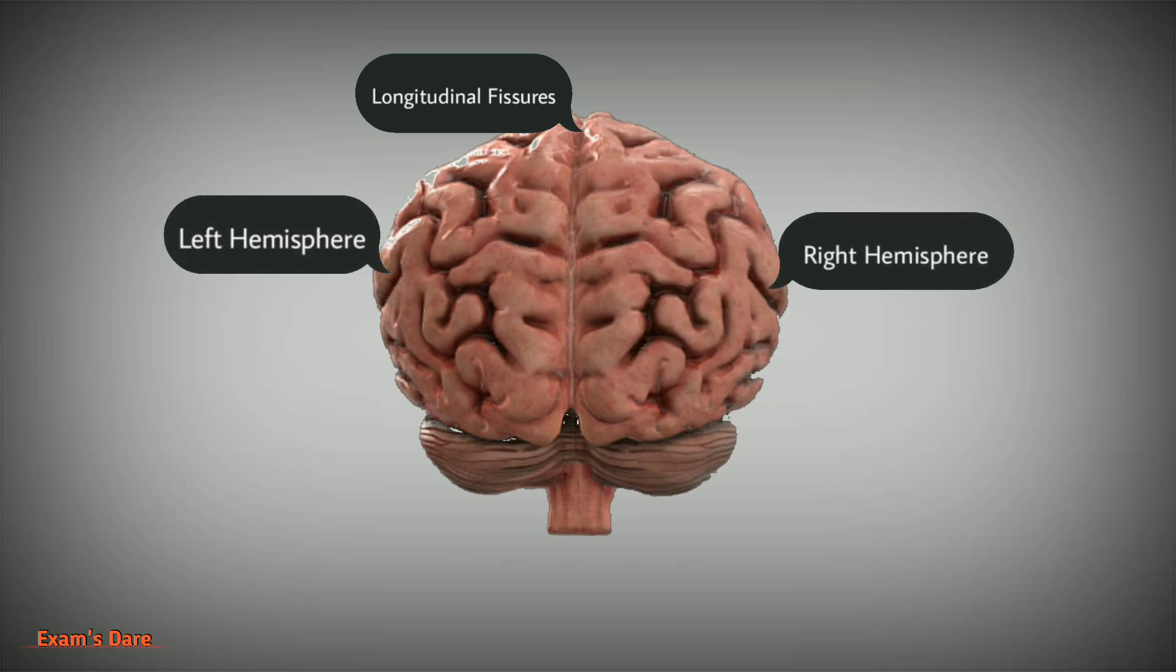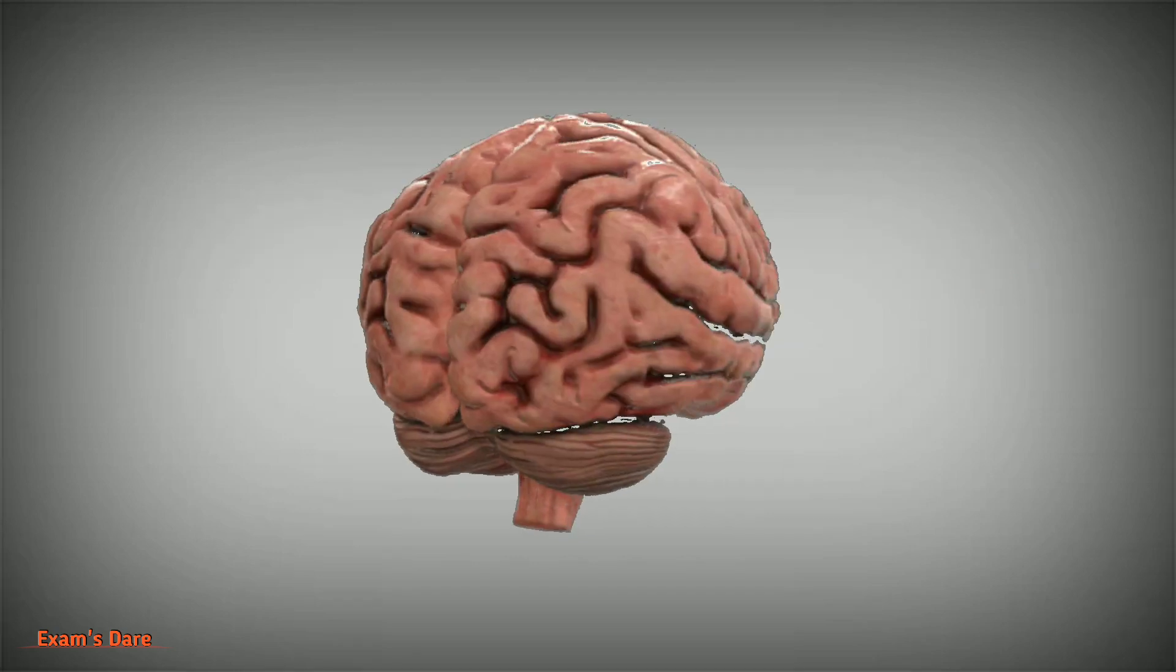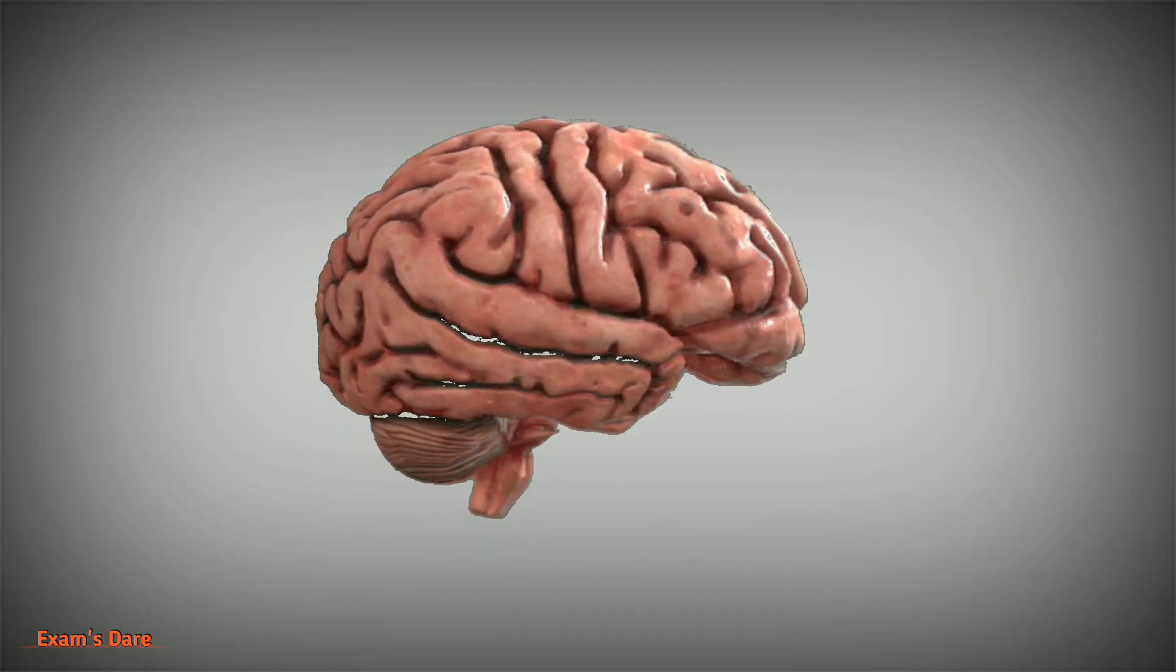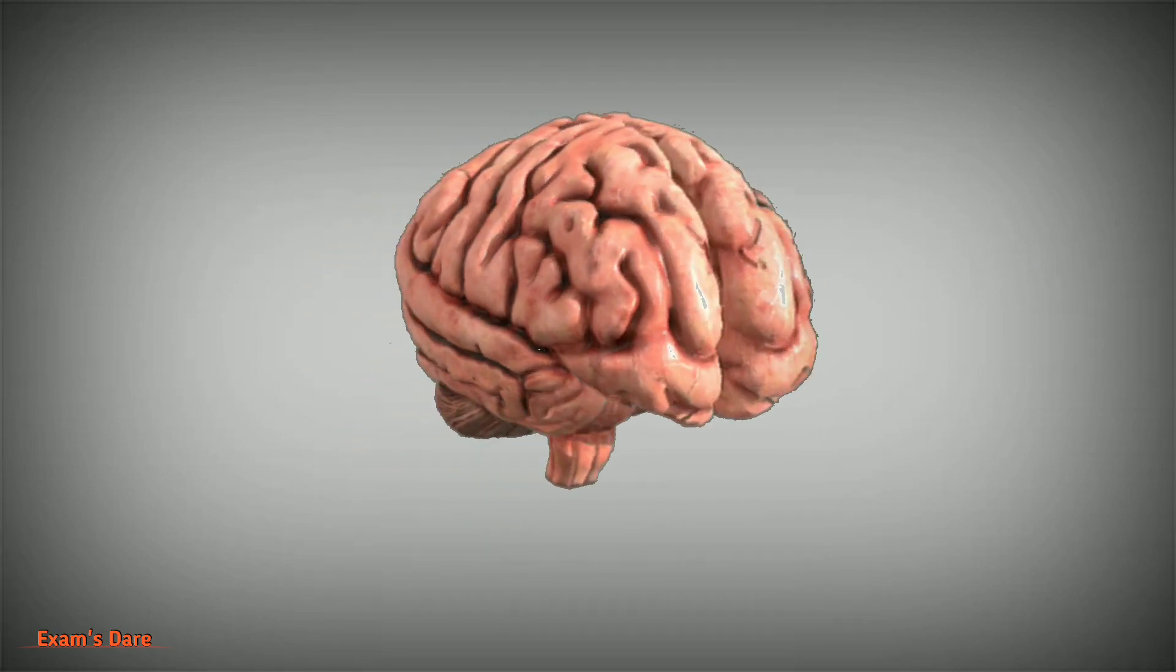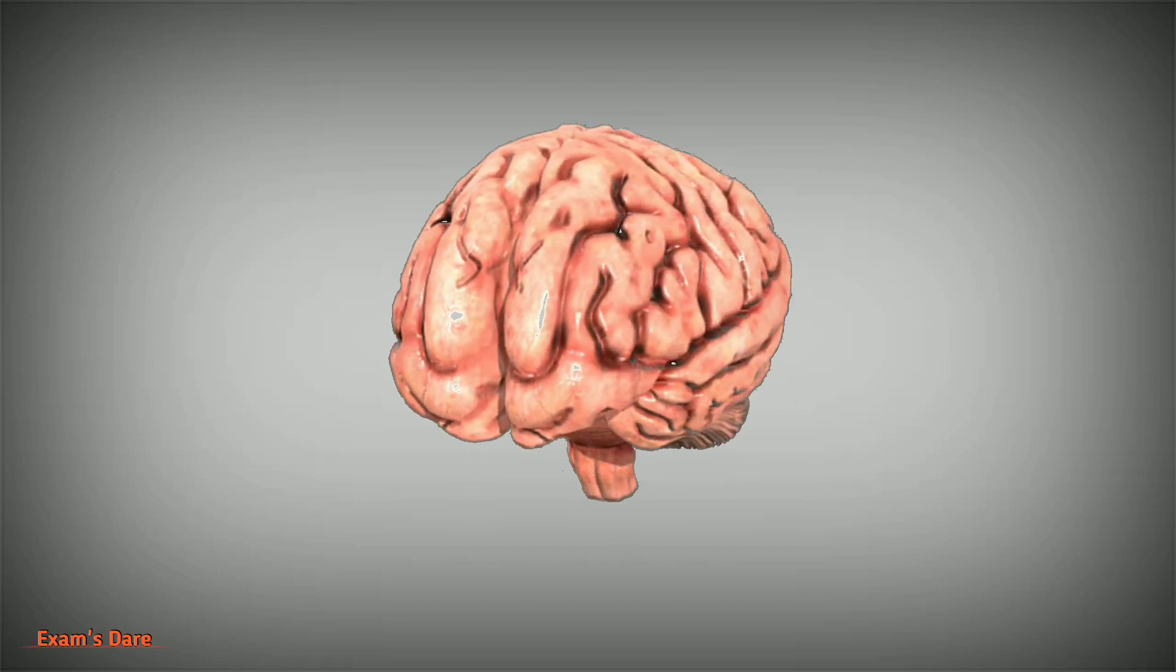Both right and left hemispheres are connected by a bridge of nerve fibers that relay information between two hemispheres called corpus callosum. Left hemisphere controls right side of the body and right hemisphere controls left side of the body.